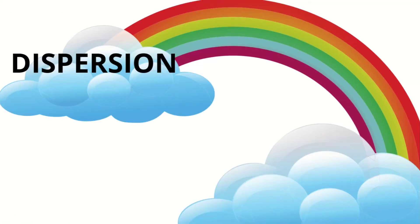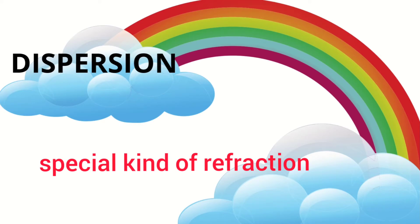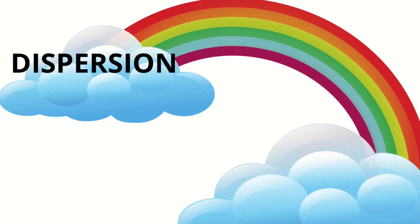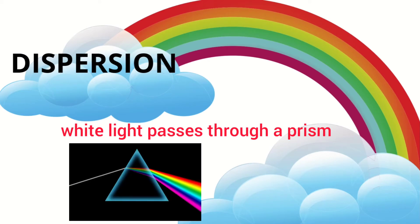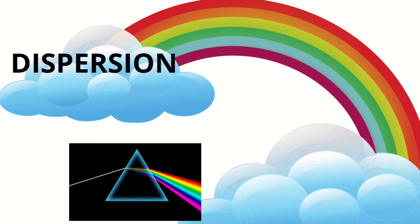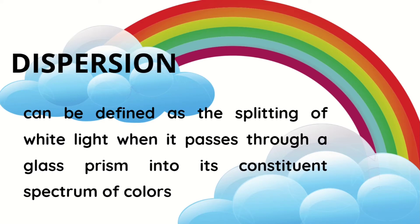A while ago, we highlighted the arrangement of colors of light as ROYGBIV when dispersion happens. By the way, what is dispersion? You have to understand that dispersion is a special kind of refraction which provides us the colors of light. This phenomenon is observed when white light passes through a prism. When white light enters the prism, separation into different colors is observed. Dispersion, which is a special kind of refraction, can be defined as the splitting of white light when it passes through a glass prism into its constituent spectrum of colors.